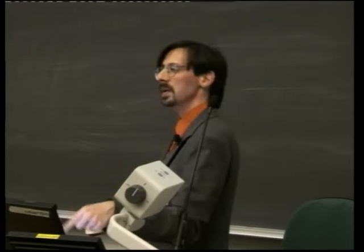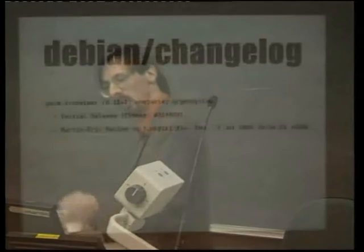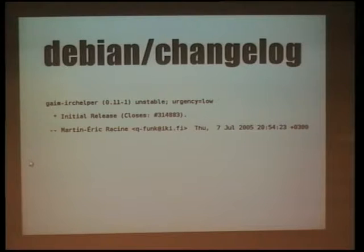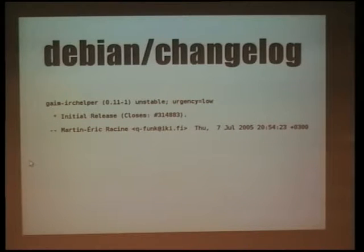The next important piece of information is who made that last change to the package and when. This line has a precise format: a space, dash, space, name, email address, two spaces, and then the date in a special format referring to RFC 822. That date format is something you've already seen if you've ever looked at a raw email message — it's a standard internet message delivery date format. There are tools to produce that special date type as well, which I'll mention in a bit.